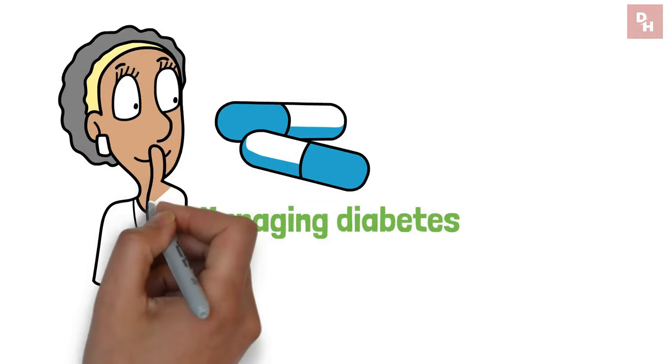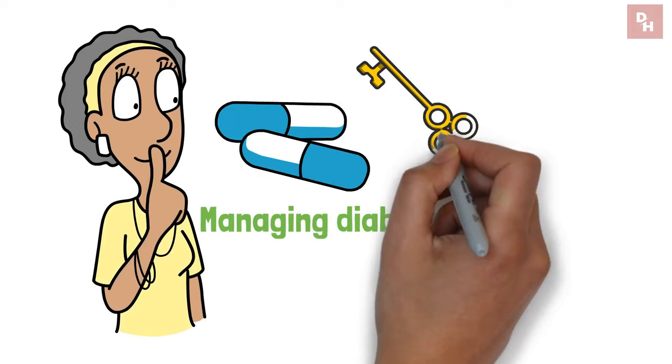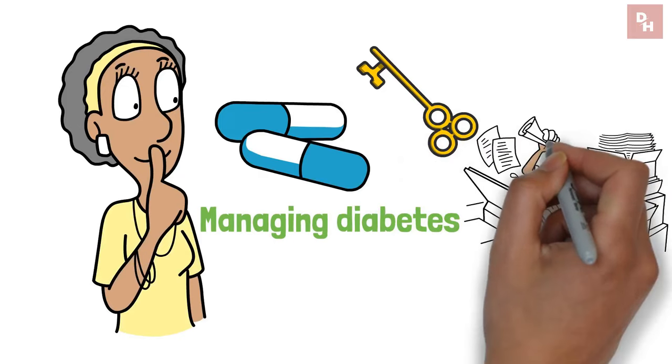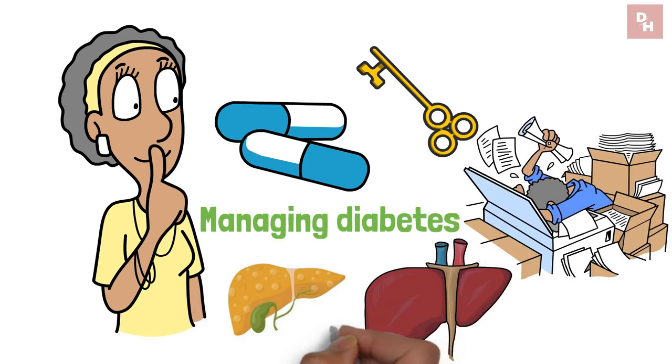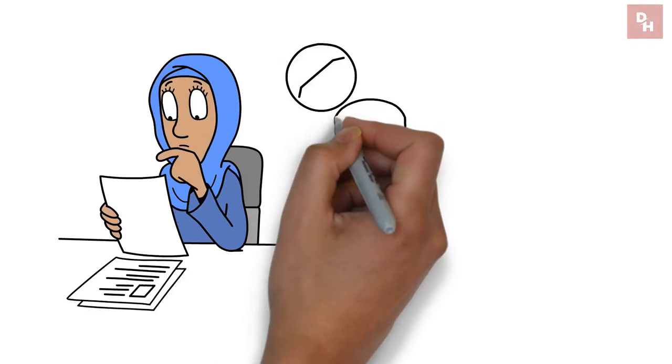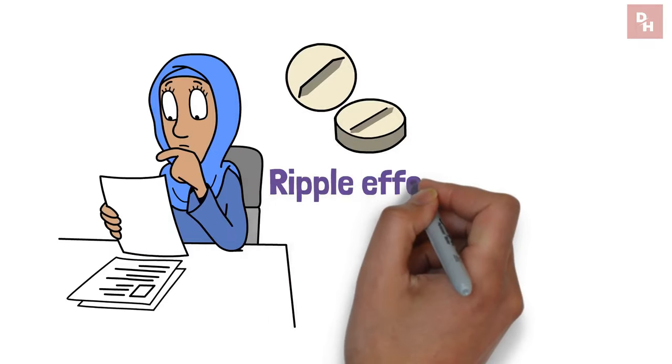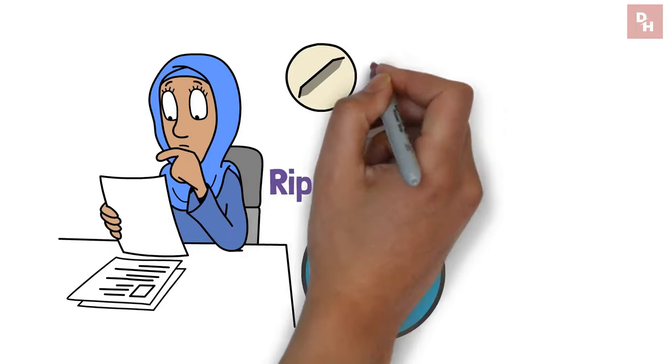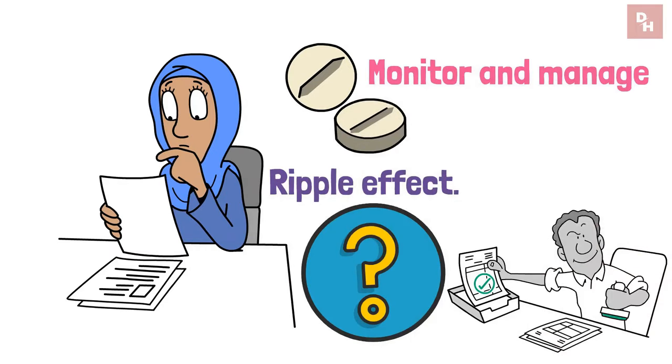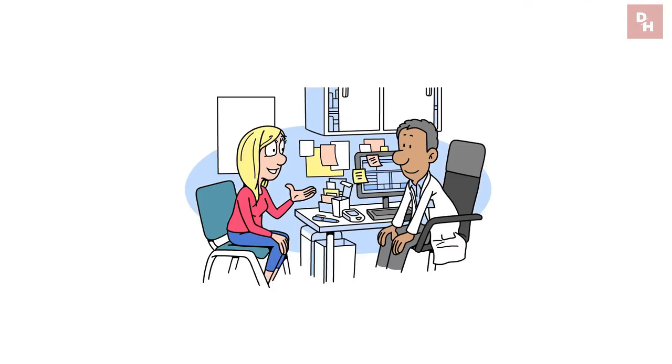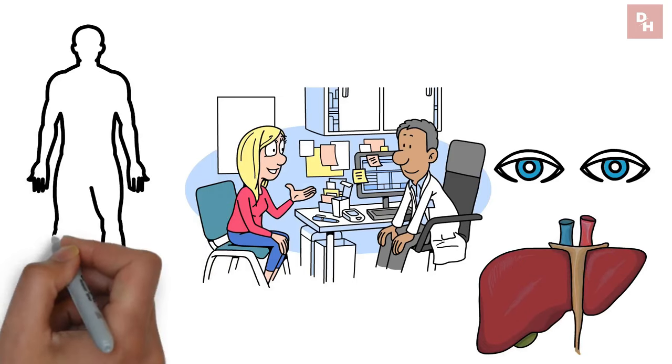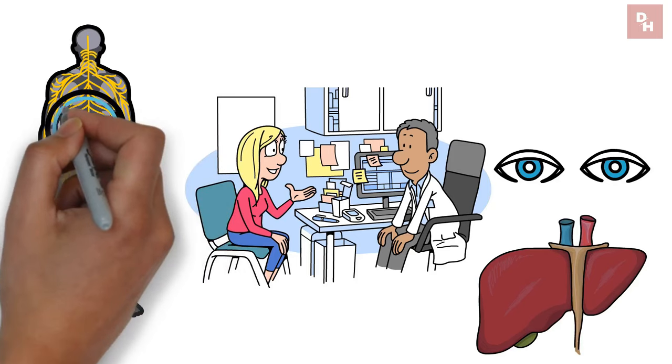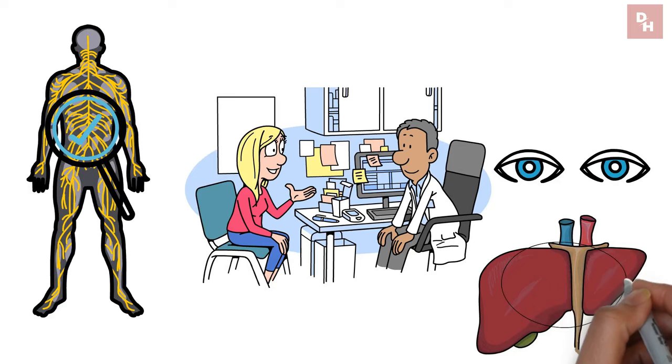While these medications are invaluable in managing diabetes, it's crucial to remember that the liver plays a key role in processing them. Just like a busy office worker buried under paperwork, the liver can get overwhelmed, leading to elevated liver enzymes, a sign of stress or damage. It's a reminder that every medication we introduce into our body's ecosystem has a ripple effect. That's why the mantra, monitor and manage should be your guiding principle. Regular checkups with your healthcare provider to keep an eye on your liver's health can make all the difference. It's about finding that sweet spot where your blood sugar is under control and your liver is thriving, not just surviving.